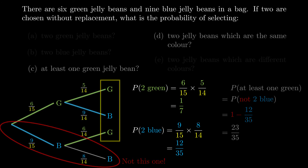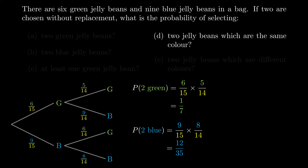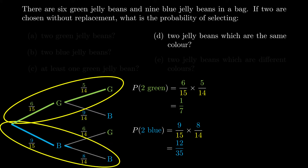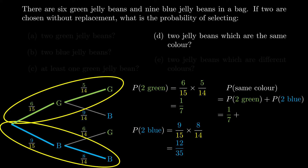Part D asks for two jelly beans of the same color. Same color means we might have them both green or both blue — those are our two options. The probability of getting the same color is when we add those two options together. That's 1/7 for two greens plus 12/35 for two blues, giving 17/35.